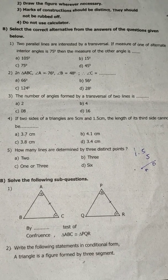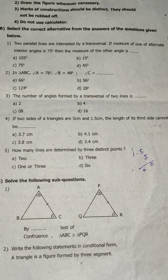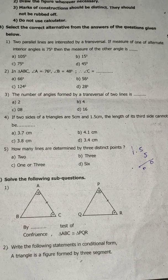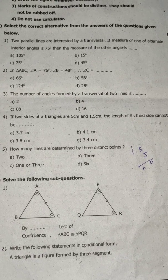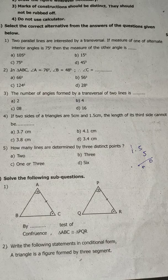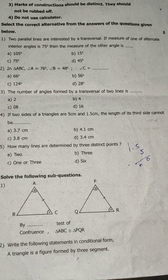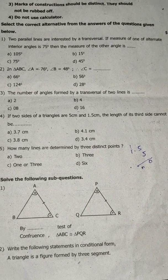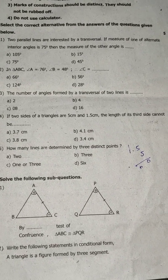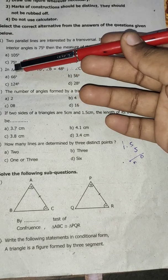Fill in the blanks. Two parallel lines are intersected by a transversal. If the measure of one of the alternate interior angles is 75 degrees, then the measure of the other angle is.